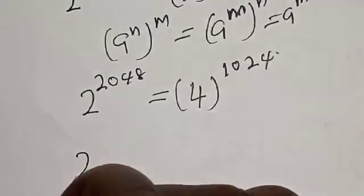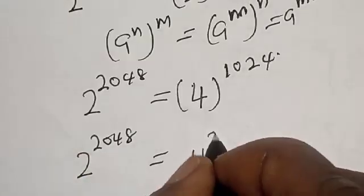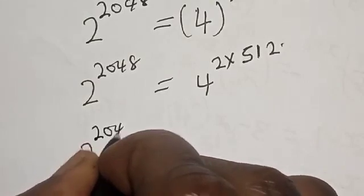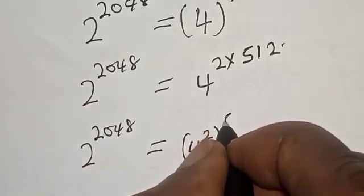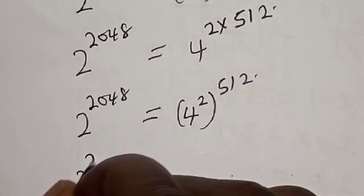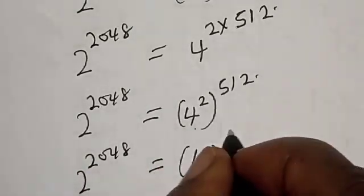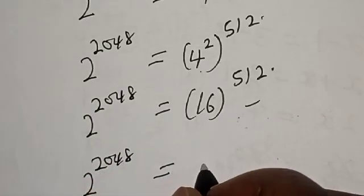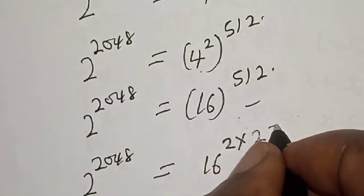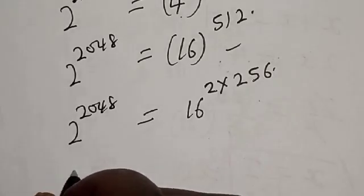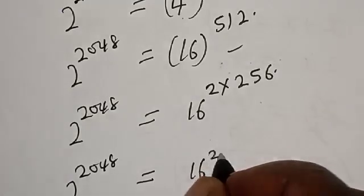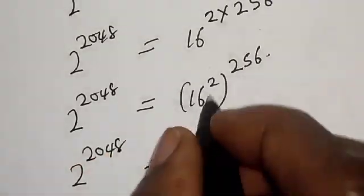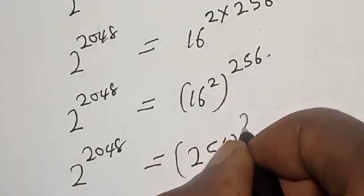Now we have 2 raised to power 2048 is equal to 4 raised to power 2 multiplied by 512, which gives us 4 squared raised to power 512, equal to 16 raised to power 512. Then 16 raised to power 2 multiplied by 256 gives us 16 squared raised to power 256, which is 256 raised to power 256.